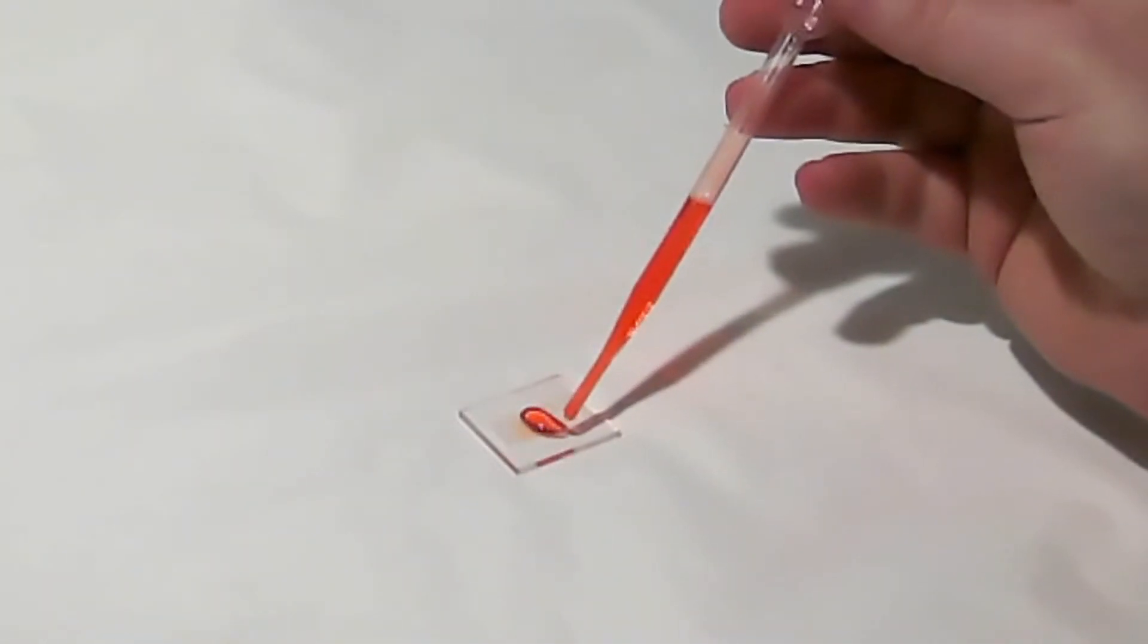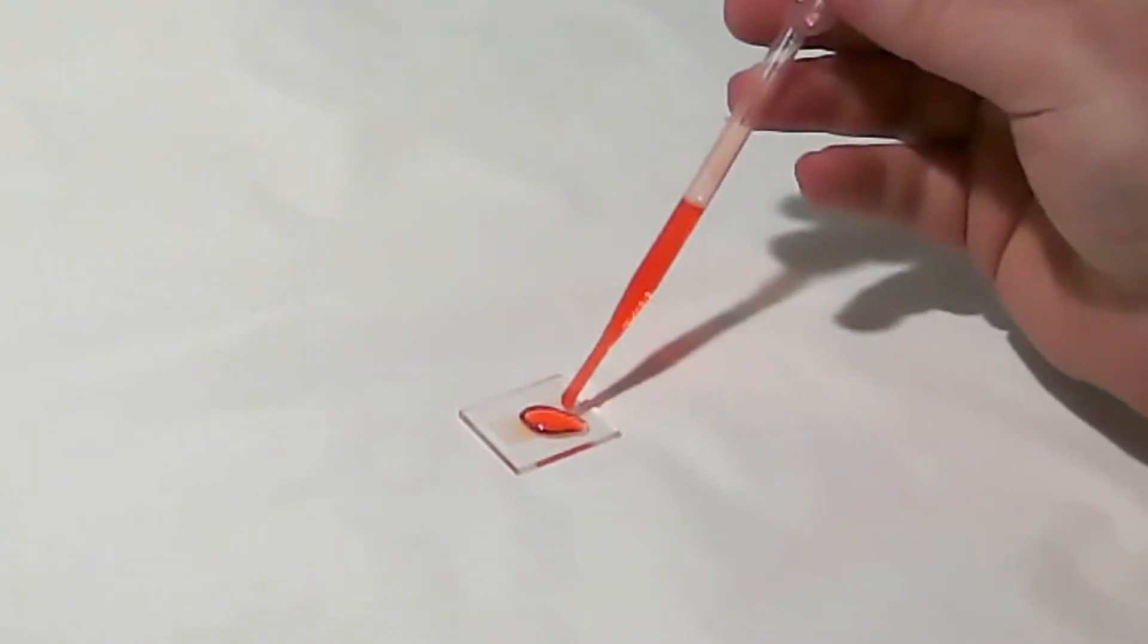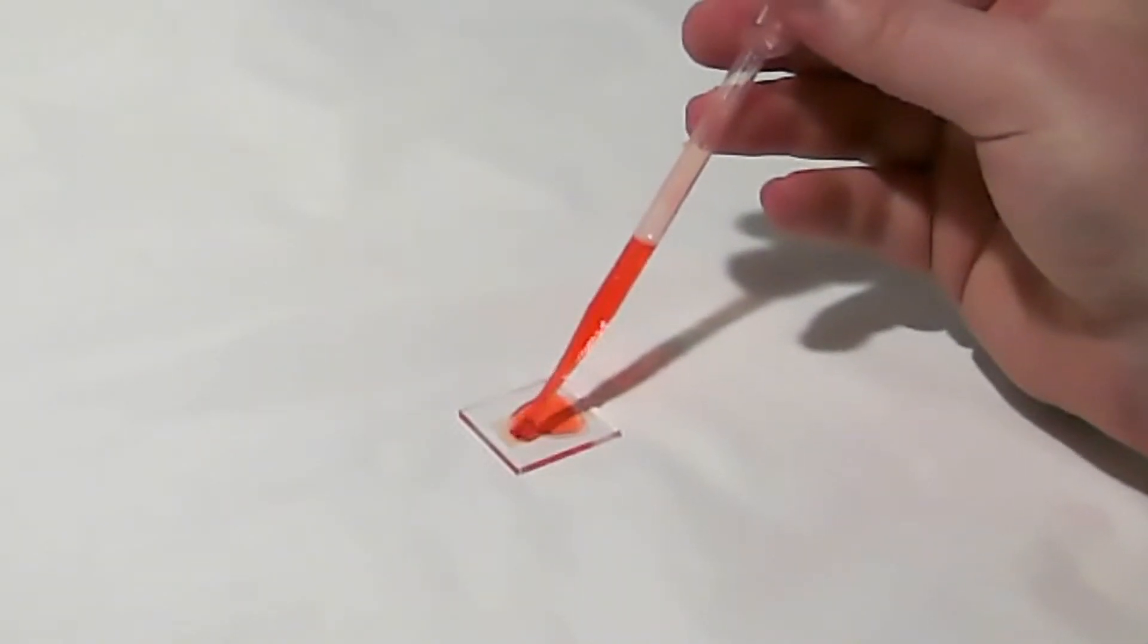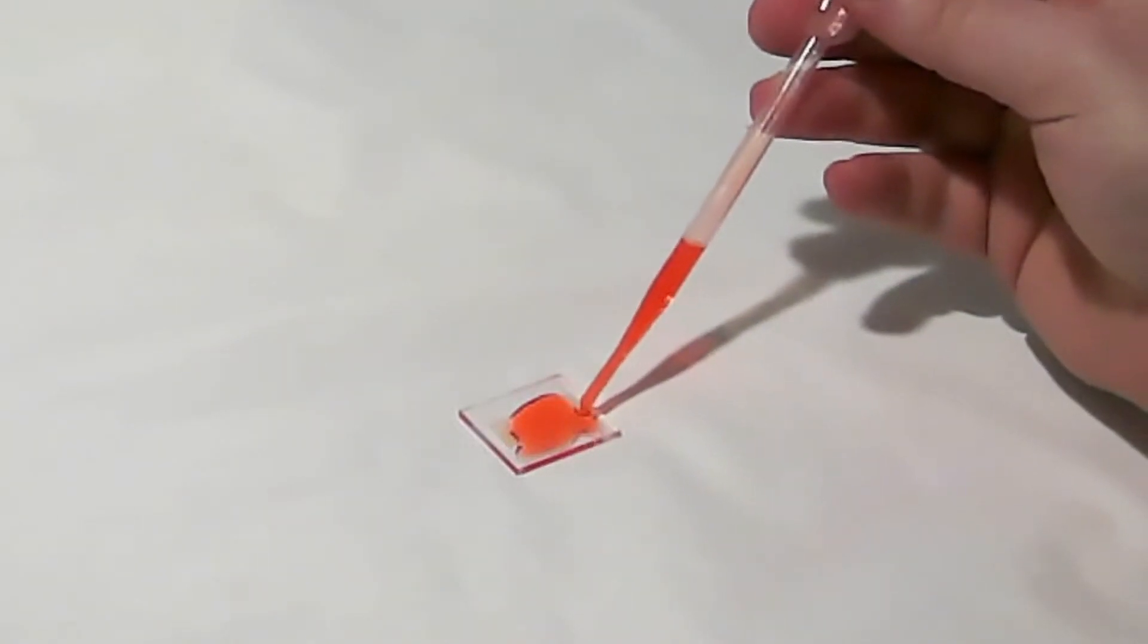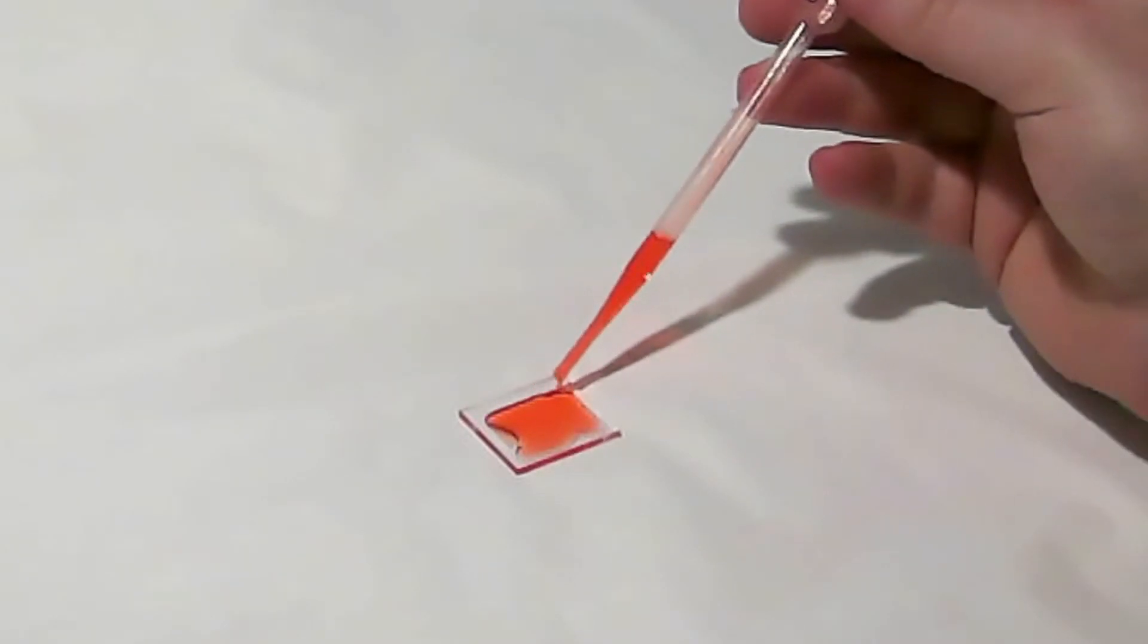Like in many of our other videos, we'll be using a pipette and our 30 milliliter vial to apply the polymer. If a more precise application is needed, please use the 15 milliliter vial and the applicator brush along with it.